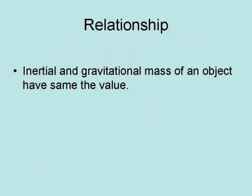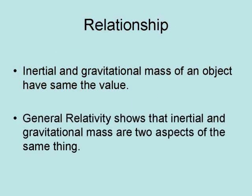The inertial and gravitational mass of an object have the same value. Thanks to general relativity, we now know that the reason for this equivalence is that inertial and gravitational mass are two aspects of the same thing.